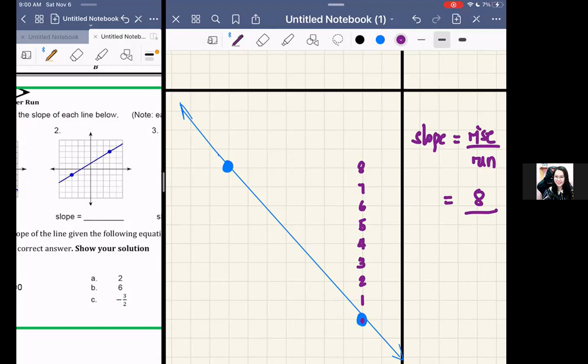Run - when going up in rise, that is positive. When going down, that is negative. Here, let's count again: one, two, three, four, five, six, seven. Seven, but it is going to the left, therefore this is negative. Going to the right is positive, so it will become negative seven. Now this will be the slope.